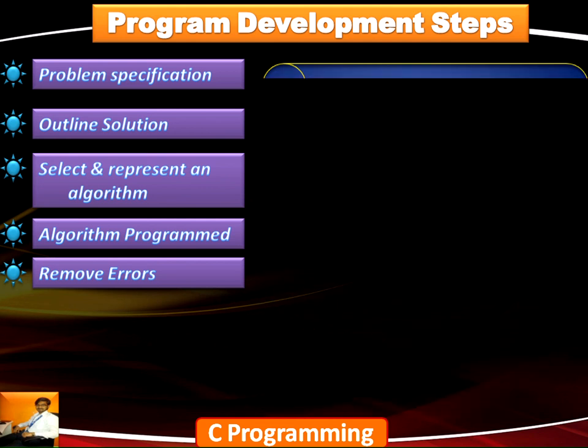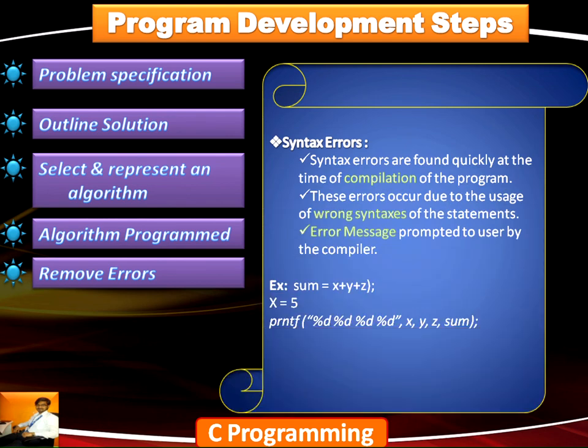Coming to syntax errors: syntax means rules. Every language we speak has certain grammatical rules that we need to follow. Similarly, a programming language has certain programming rules we need to follow. During the compilation process — the translation of the source code to a machine-understandable code — the compiler checks whether the syntactical rules are followed by the programmer. If the syntax is not according to the programming rules, syntax errors are shown by the compiler. Any wrong syntaxes in the statements will prompt an error message to the user.